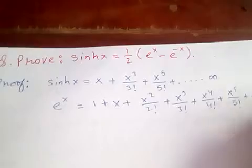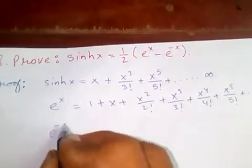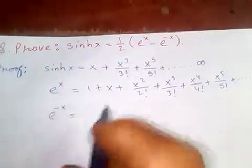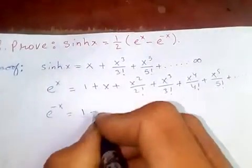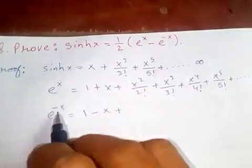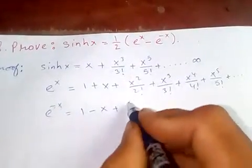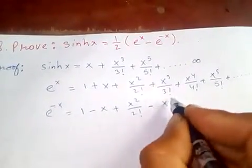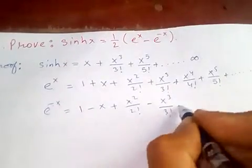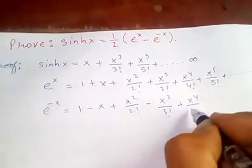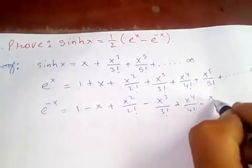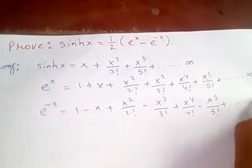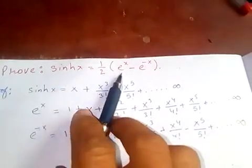And e to the negative x: just replace x by negative x, so it becomes 1 minus x plus x squared over 2 factorial minus x cubed over 3 factorial, and the signs alternate positive and negative continuing on.